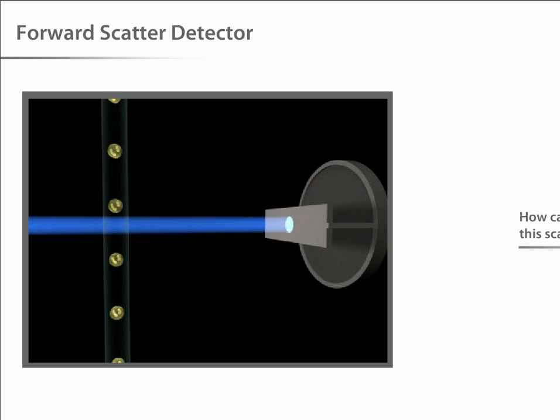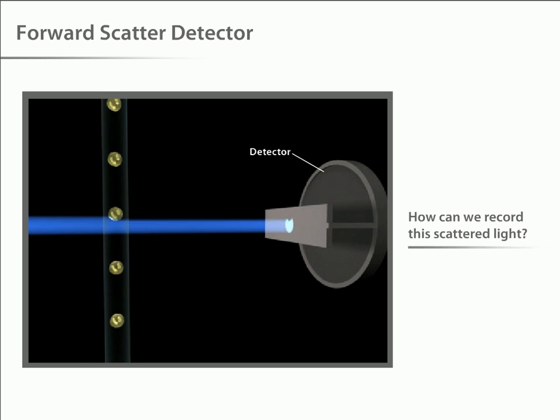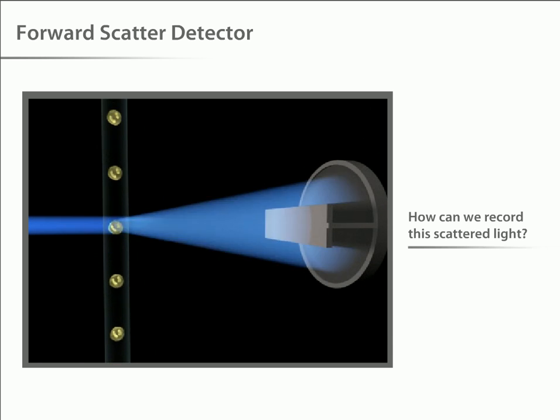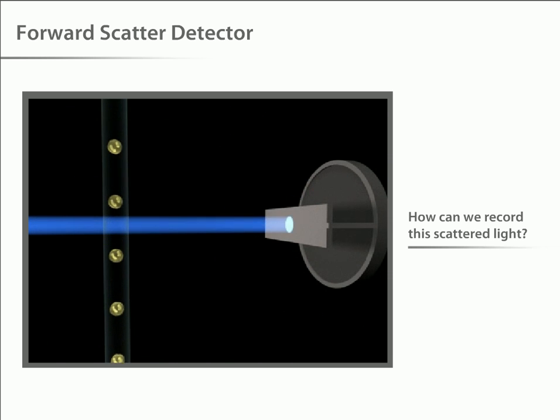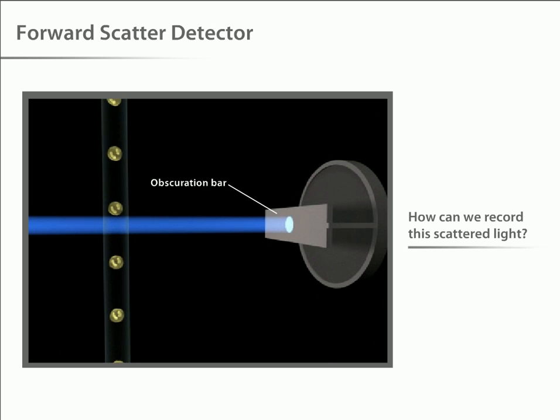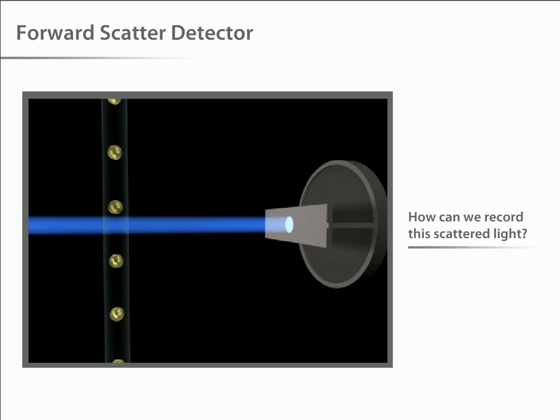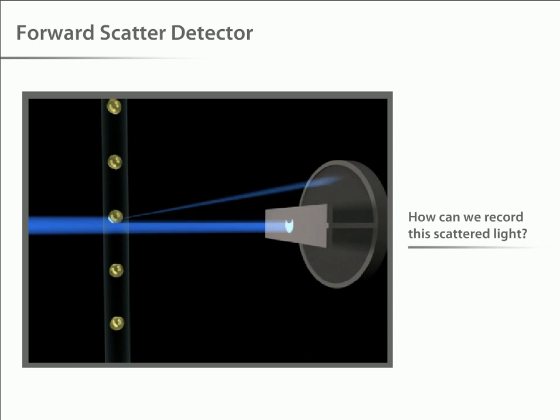But how can we record this scattered light? Light is quantified by a detector that converts its intensity into voltage. In most cytometers, a blocking bar, called an obscuration bar, is placed in front of the forward scatter detector. The obscuration bar prevents any of the intense laser light from reaching the detector. As a cell crosses the laser, light is scattered around the obscuration bar and is collected by the detector.